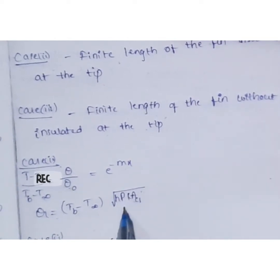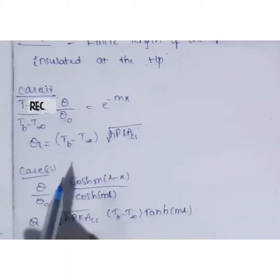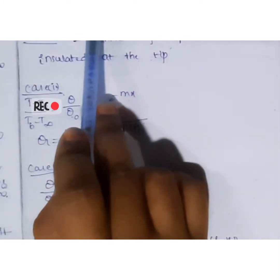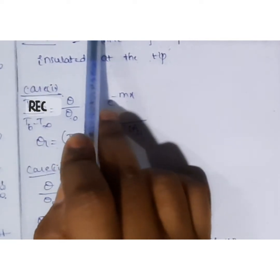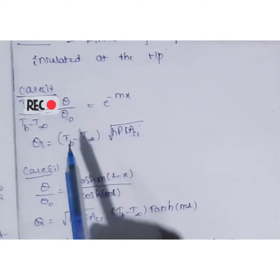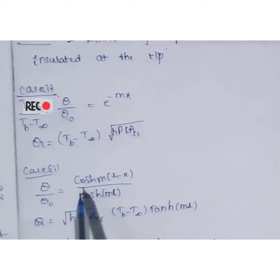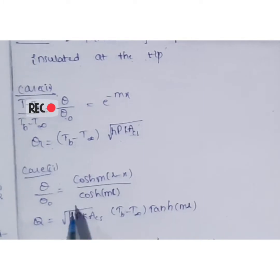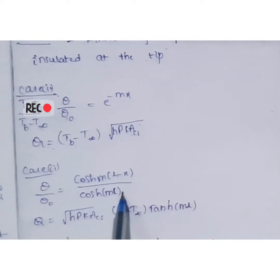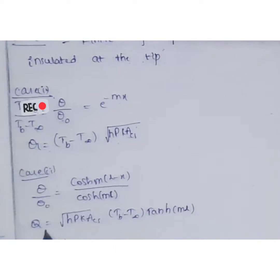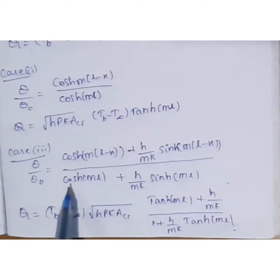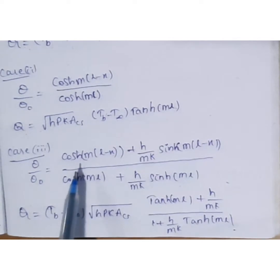Case 2 is the finite length fin insulated at the tip — also called the short fin. At the tip of this fin, insulation is applied. For this case there are two formulas: the temperature distribution formula is cosh m(L minus x) divided by cosh mL, and the second formula gives the rate of heat transfer Q.